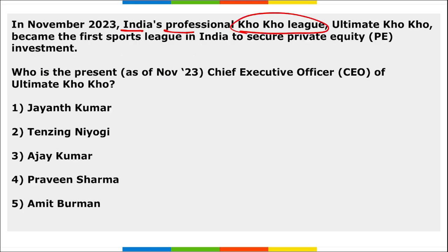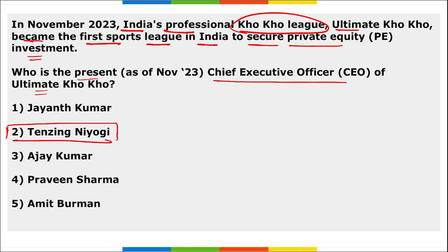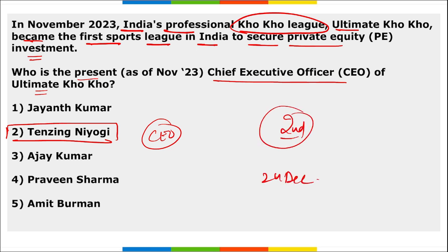Next: India's professional Kho Kho League — Ultimate Kho Kho — became the first sport league in India to secure private equity investment. The second season is scheduled to be held from 24th December to 14th January, and player auctions were held in Bhubaneswar on 21st November.